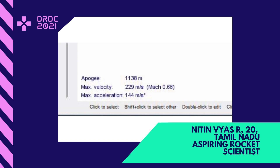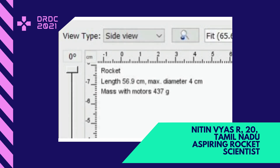The maximum acceleration is 144 meters per second squared and the maximum velocity is 229 meters per second, or Mach 0.68 — subsonic flight. The total size of the rocket is approximately 60 centimeters in length and 4 centimeters in diameter, and weighs about 437 grams.